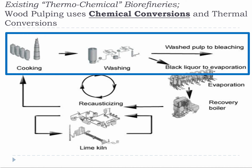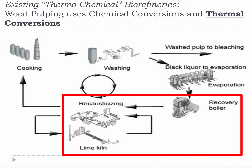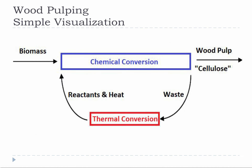We will start with wood pulping because it is an existing integrated biorefinery. You have seen this diagram before and it shows the approximate wood pulping process. Wood pulping integrates chemical conversions, roughly shown inside the blue square, with thermal conversions, roughly shown inside the red square. It is really quite simple and much easier to visualize when you think about it like this.